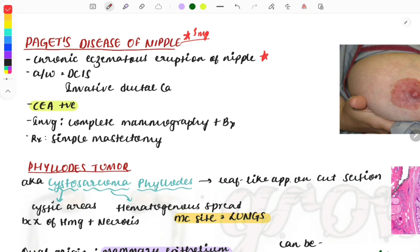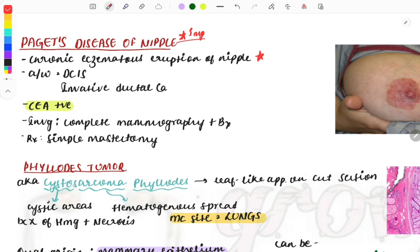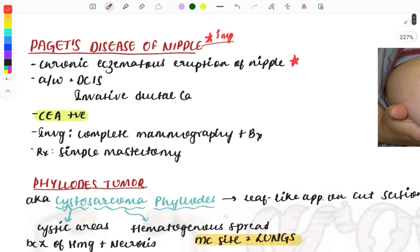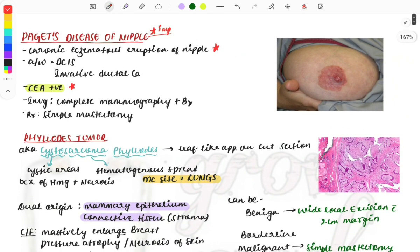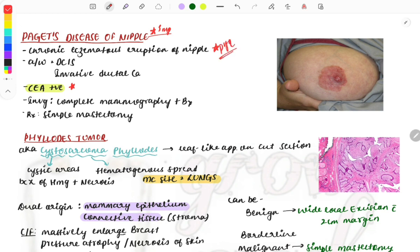A previous year question one-liner was asked on this. It's associated with DCIS (ductal carcinoma in situ) and also invasive ductal cancer. If the nipple is involved, the patient might have underlying ductal cancer. An important marker is CEA positive. Investigation includes complete mammography and biopsy, and treatment is simple mastectomy.